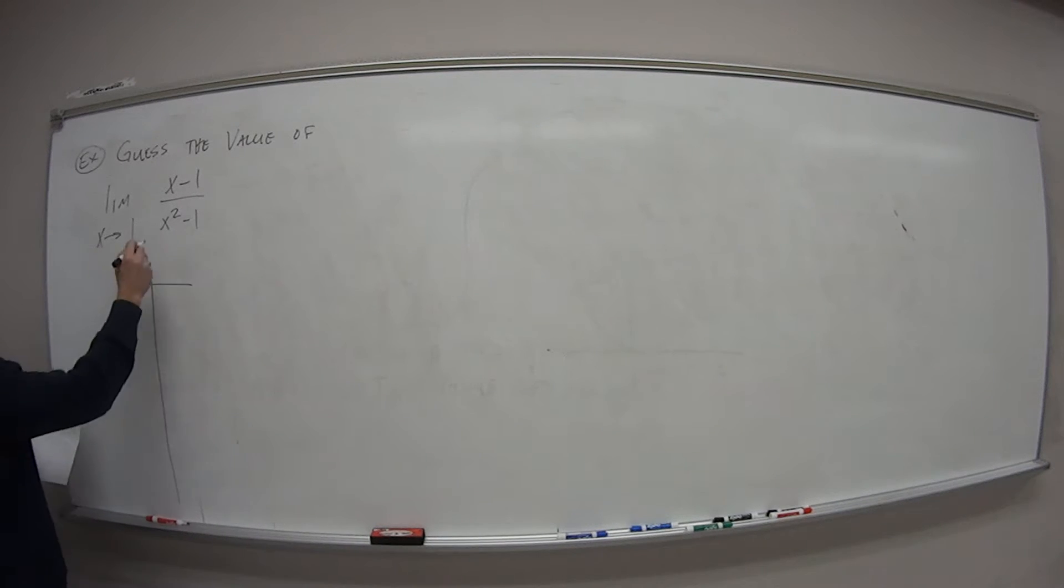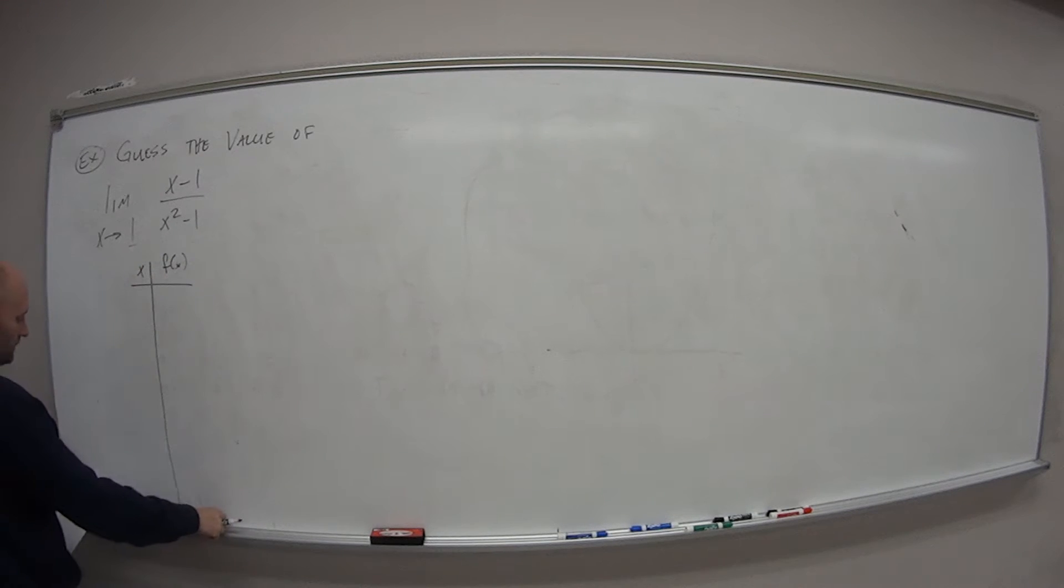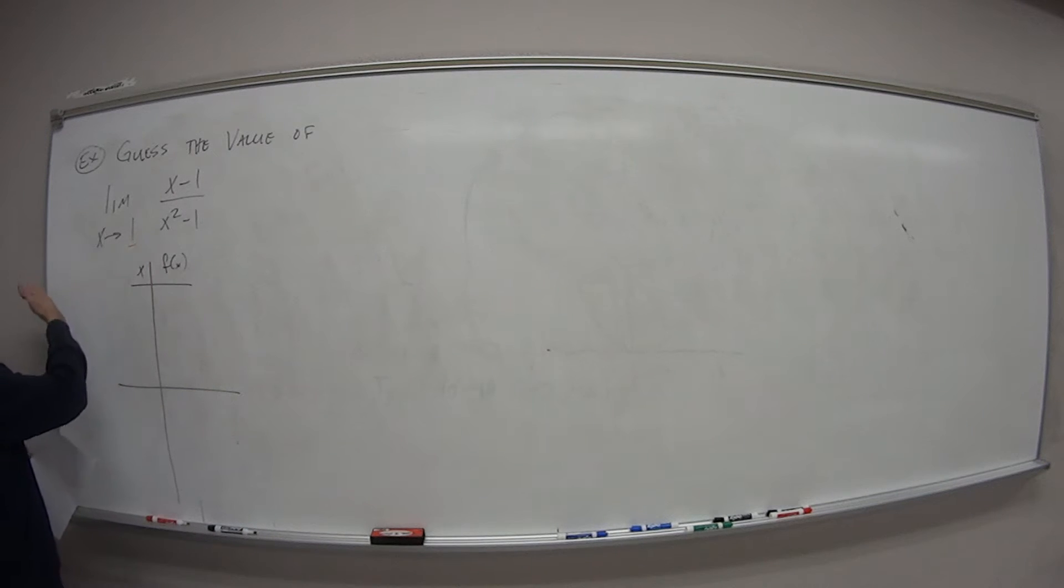So here's my values of x. This is my value for the function. So if I want values on the left side of 1, that's going to be what? Well, I could try 0.999, 0.99, 0.9.